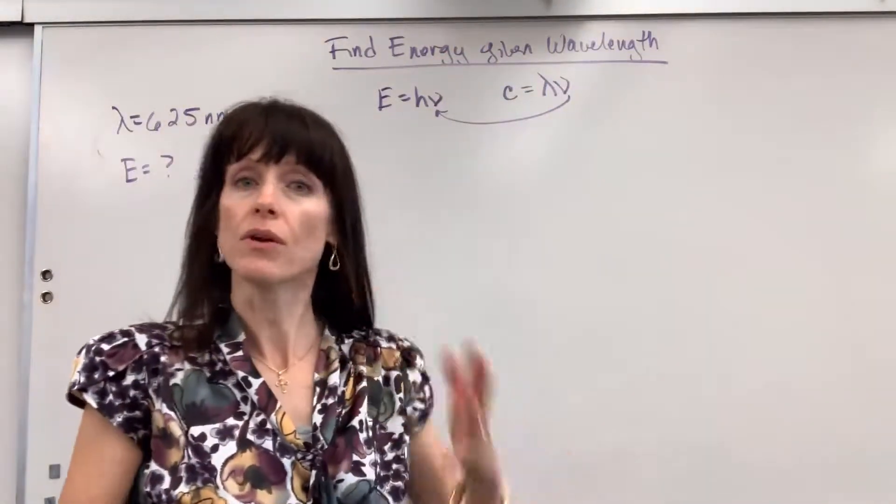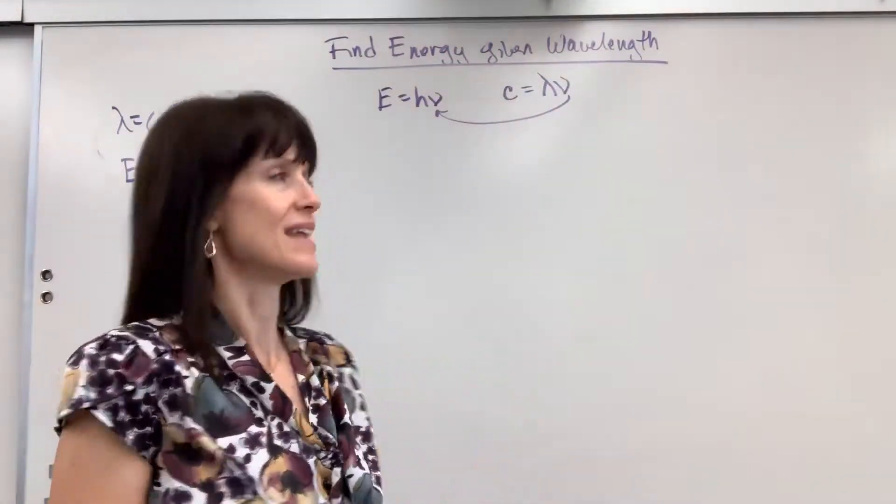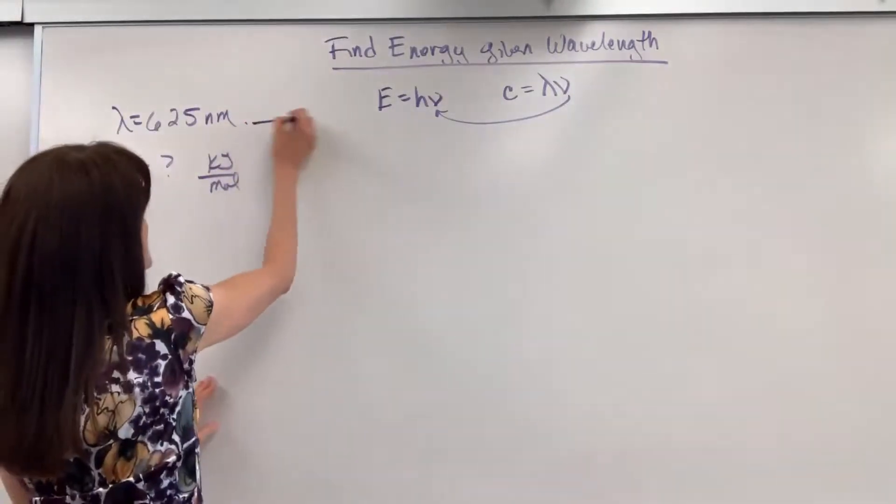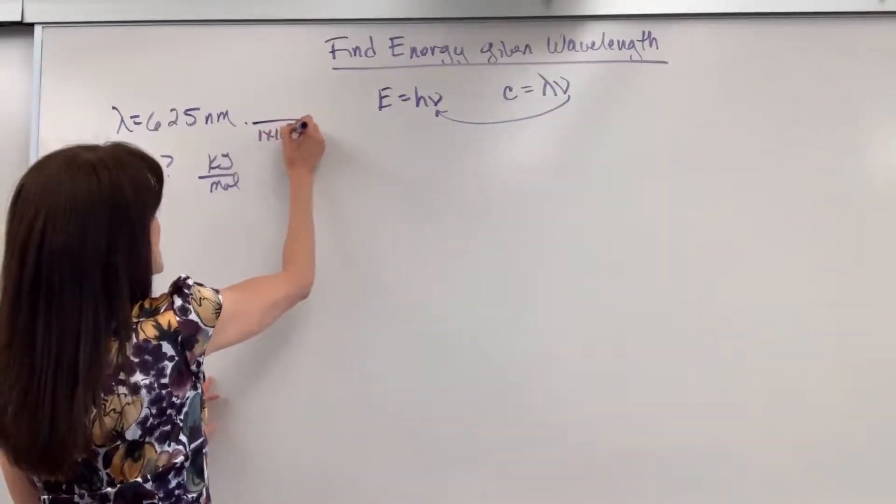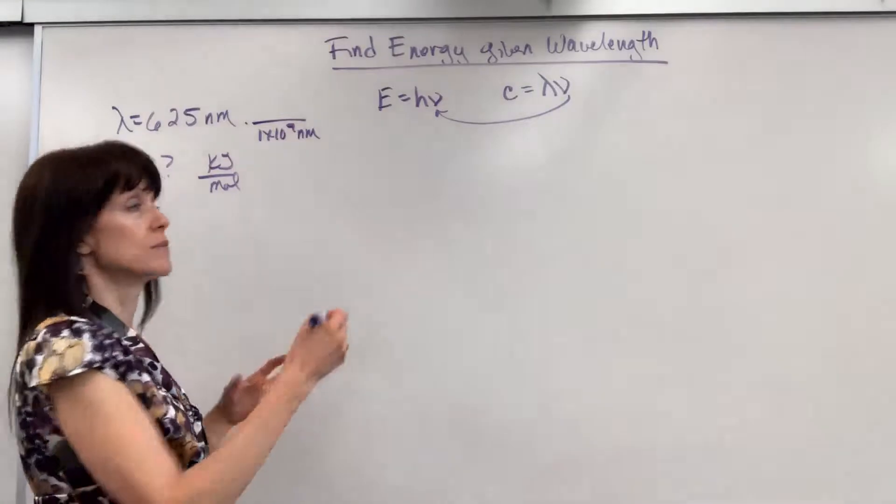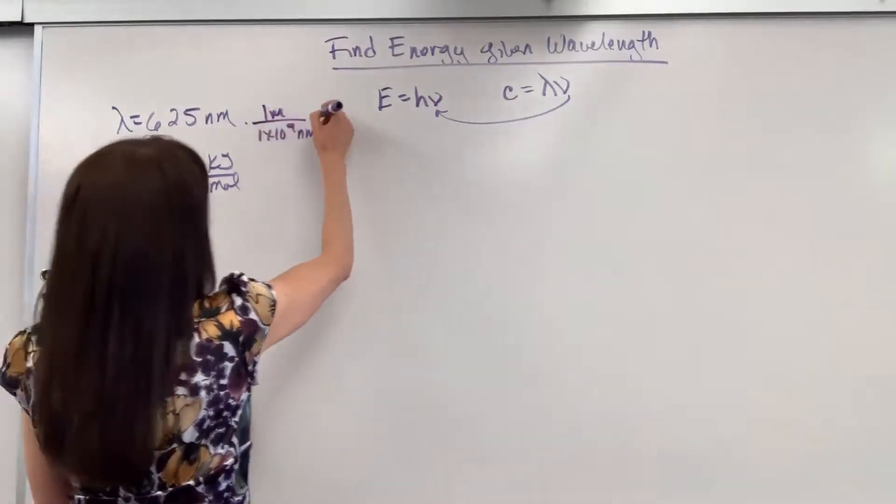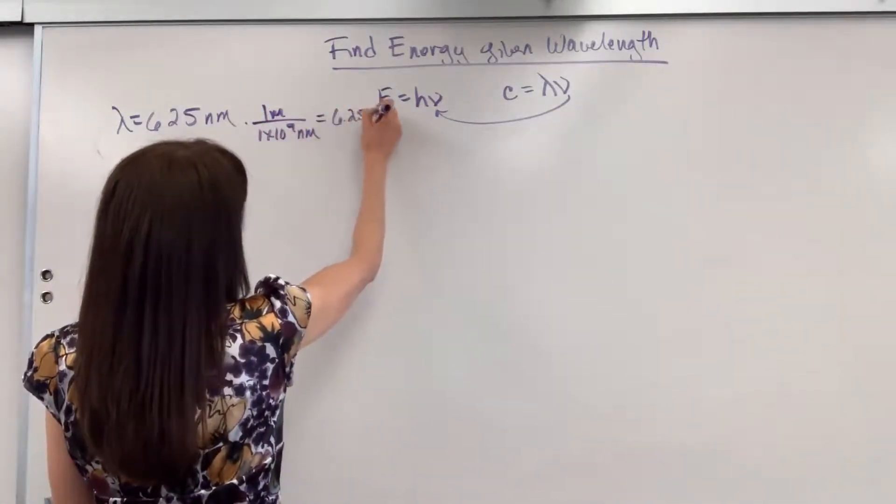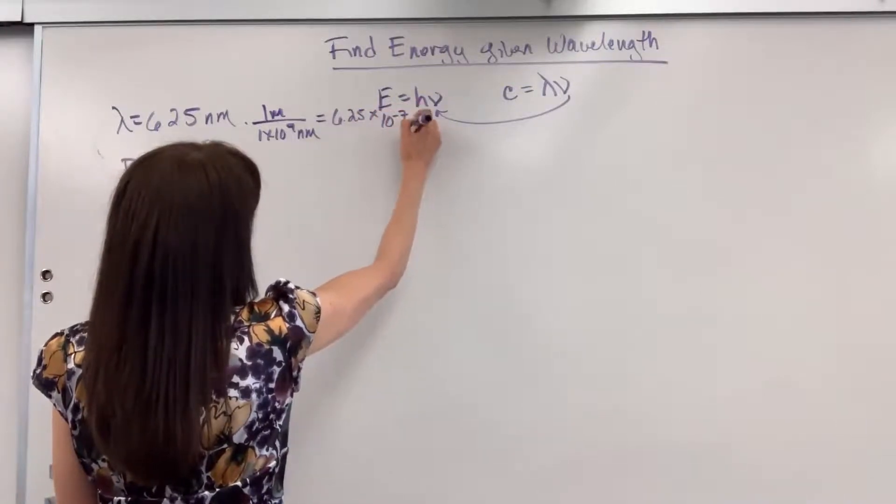For the speed of light, you know that we have to have meters, not nanometers. So let's go ahead and convert this. There's 1 times 10 to the 9 nanometers, a billion nanometers inside of 1 meter. That is going to give us 6.25 times 10 to the minus 7 meters.